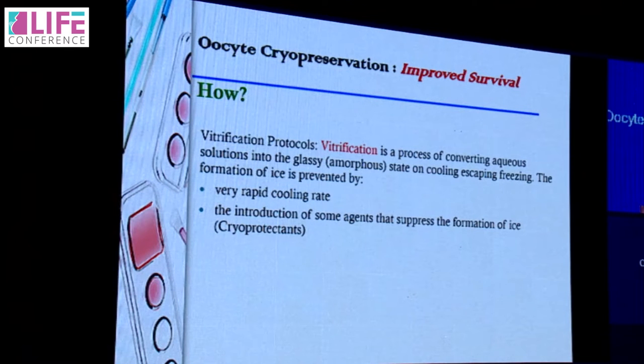We now have improved survival with oocyte cryopreservation, and this has happened because of a wonderful technique called vitrification. Vitrification is a process of converting aqueous solutions into a glassy or amorphous state on cooling, escaping freezing. The formation of ice is prevented by very rapid cooling rates and the introduction of agents that suppress ice formation — what we call cryoprotectants. Vitrification has really been the game changer, not just for oocyte vitrification but for the way we practice ART today, given its many applications in embryo cryopreservation as well.